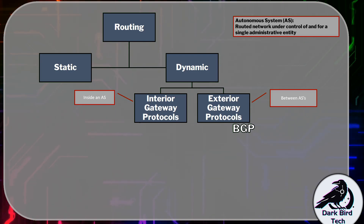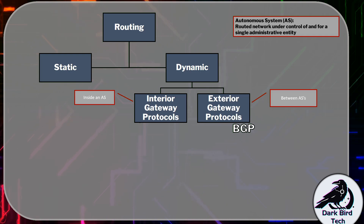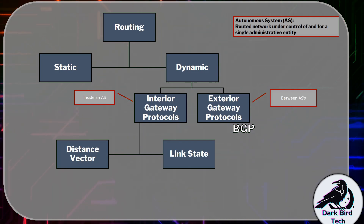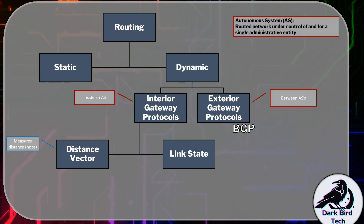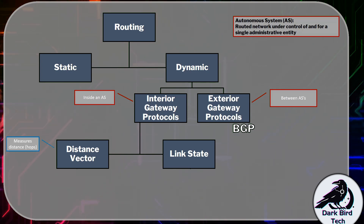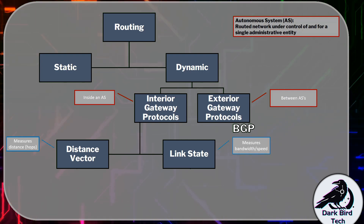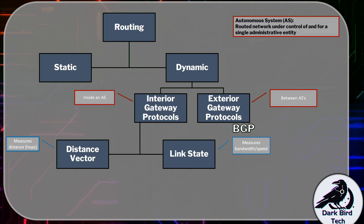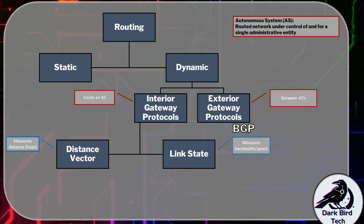With interior gateway protocols, we start talking about distance vector versus link state. Distance vector factors in how far away the destination network is, and most distance vector protocols measure distance using hop count — the number of routers you're passing through. Link state uses the overall speed or bandwidth between two locations, and depending on the protocol, you'll either measure link by link or cumulatively. It's like deciding to drive somewhere: do you keep the mileage low, or the travel time low?